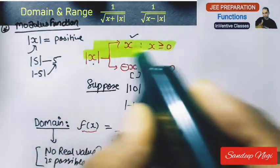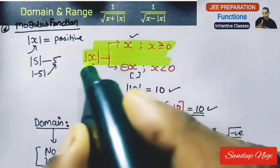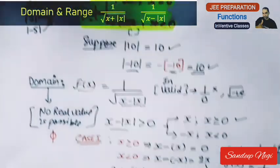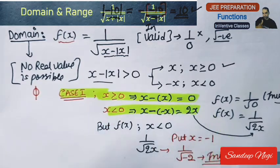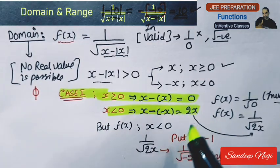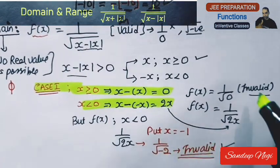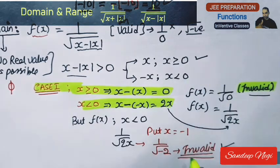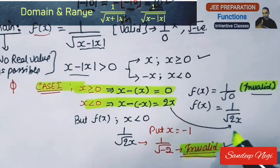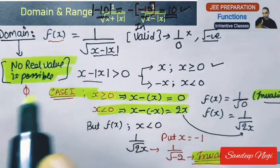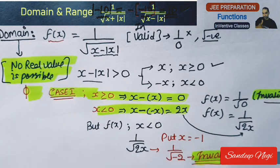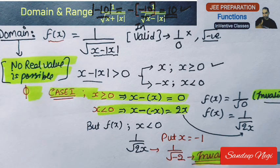So the first point: when x is 0 or greater, the function gives an invalid answer. When x is less than 0, the function also gives an invalid answer. So no real value is possible — meaning you cannot put any real value in x. This is your domain: no real value is possible.